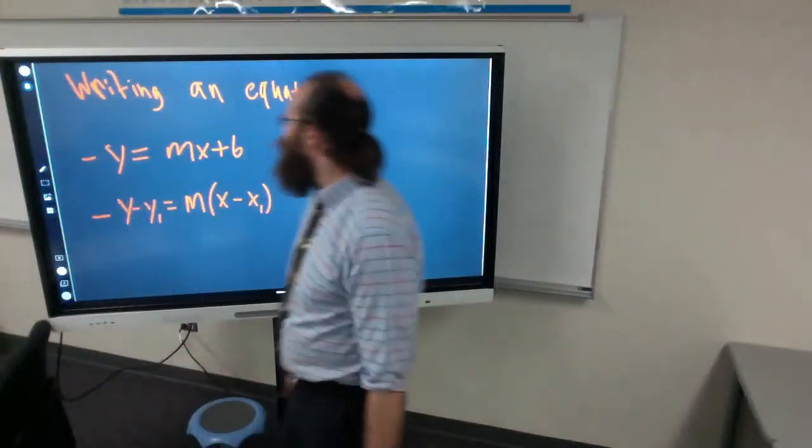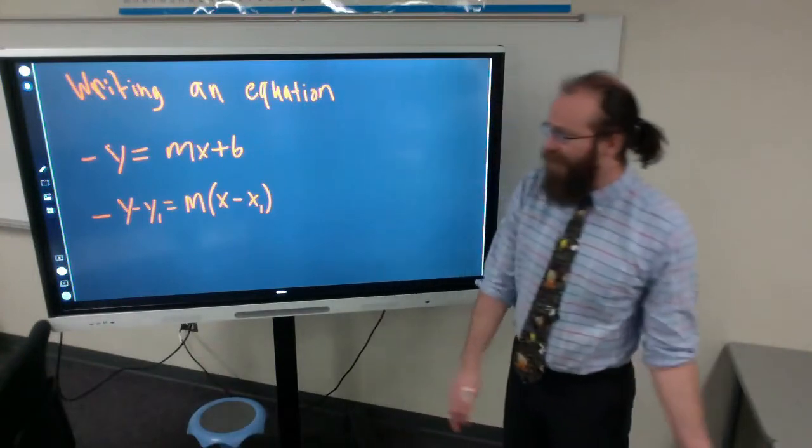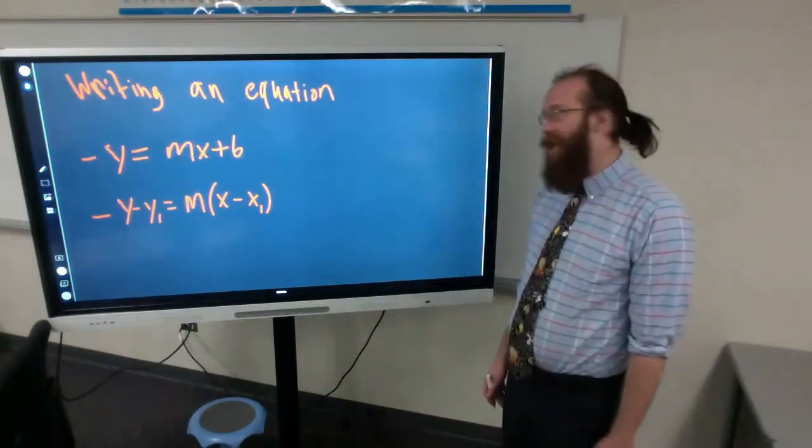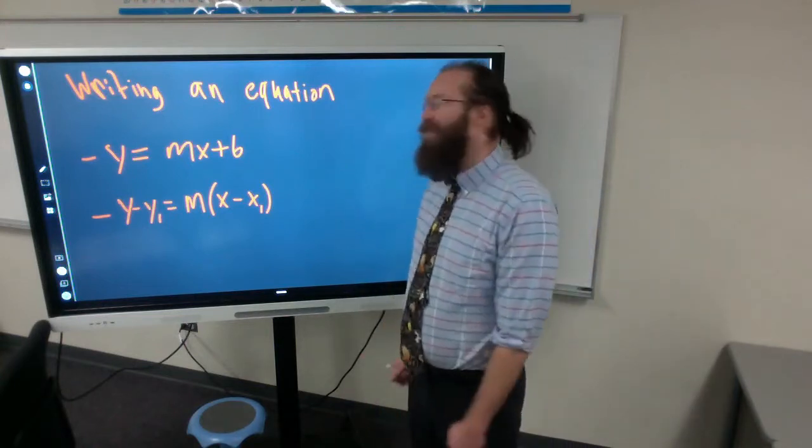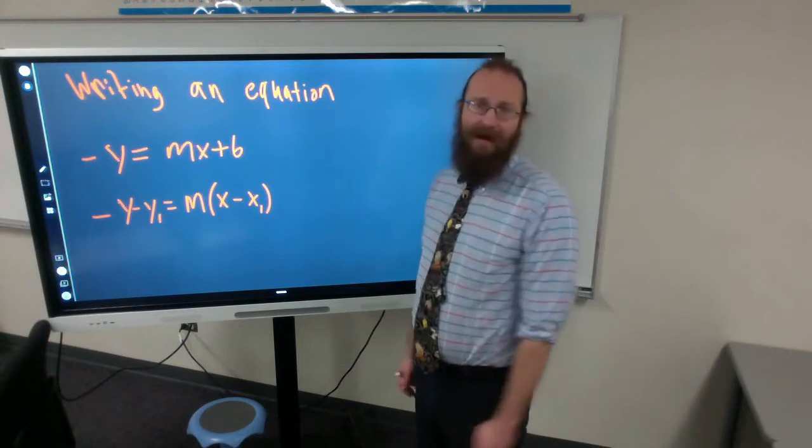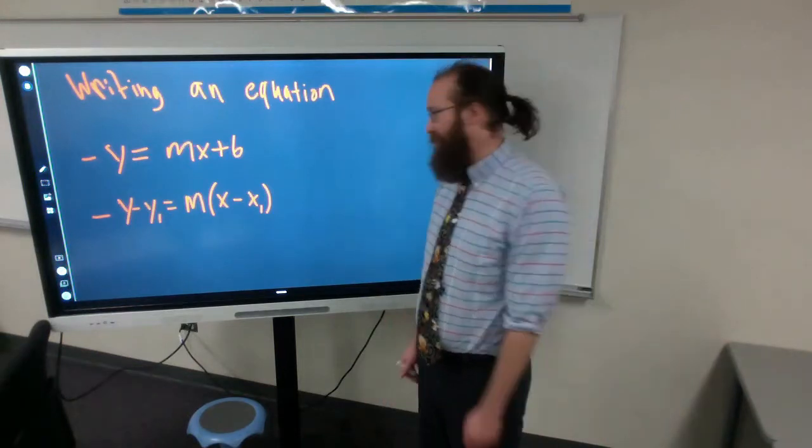So there's two different forms of equations. We can write it from a slope and a y intercept, or we can write it from a slope and a point, or we can write it from two points.